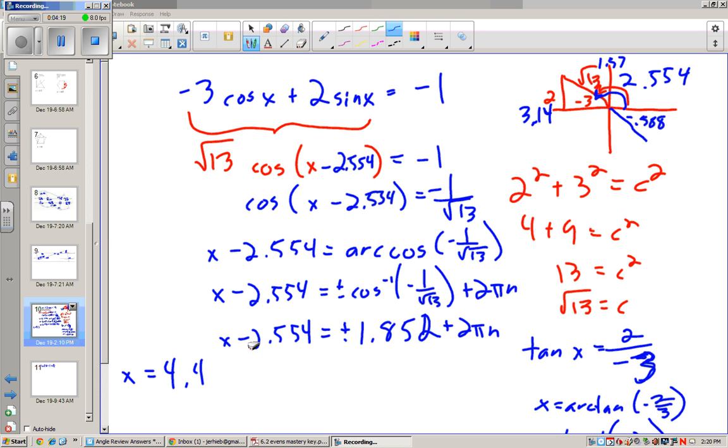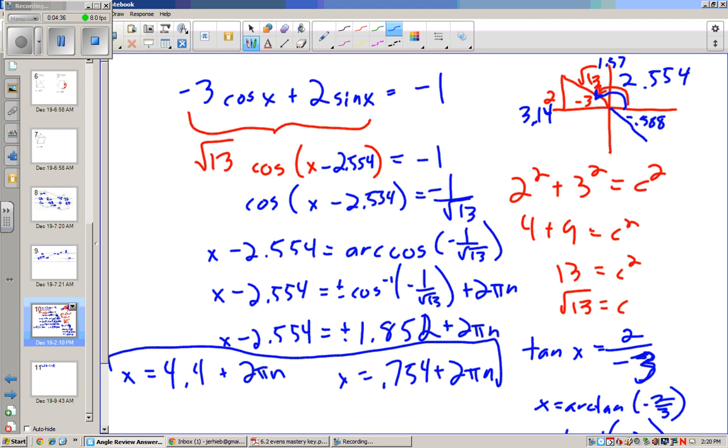So 4.4 plus 2 pi n. And then negative 1.8 plus 2.554 is 0.754 plus 2 pi n. So those are my two general equations.